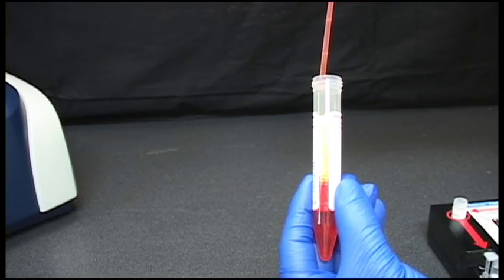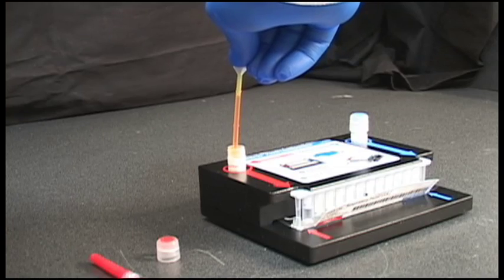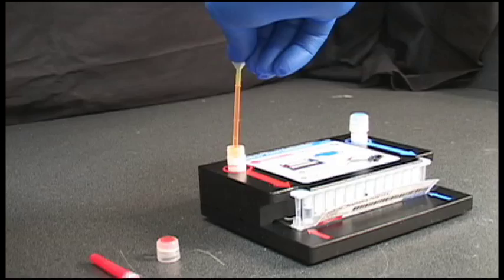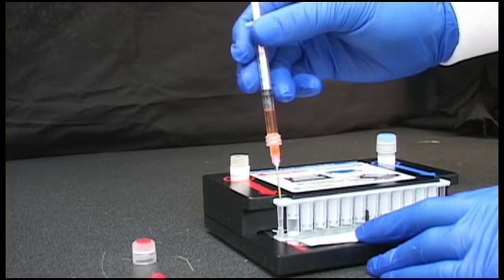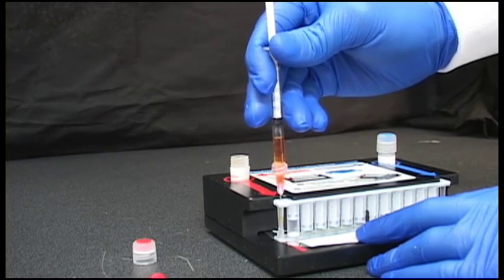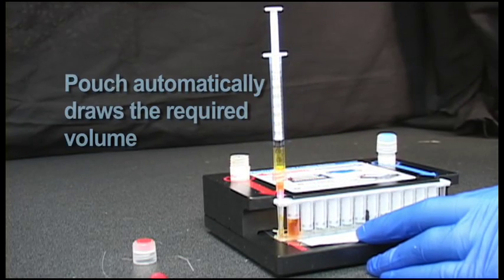Next, sample is added to the FilmArray sample buffer. This solution is then mixed and injected into the FilmArray pouch through the red inlet port located on the left side of the pouch. Again, the vacuum in the pouch automatically draws the required volume.